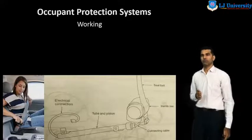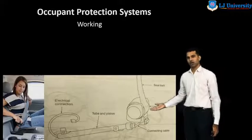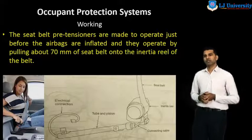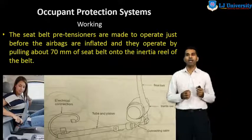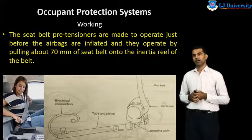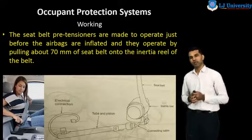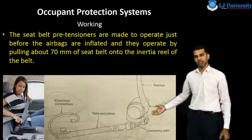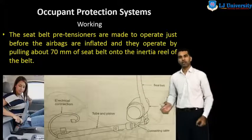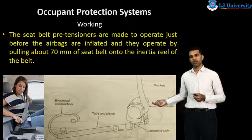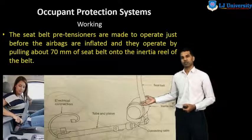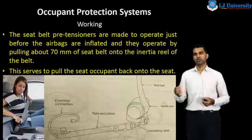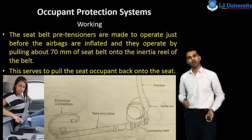Now we discuss about the working of the seat belt pretensioner. This diagram shows the seat belt pretensioner operation. The seat belt pretensioners are made to operate just before the airbags are inflated, and they operate by pulling about 70 mm of the seat belt onto the interior field reel of the belt. At the time of the accident, this reel is rotated in the opposite direction so that the person cannot go forward. This serves to pull the seat occupant back into the seat.